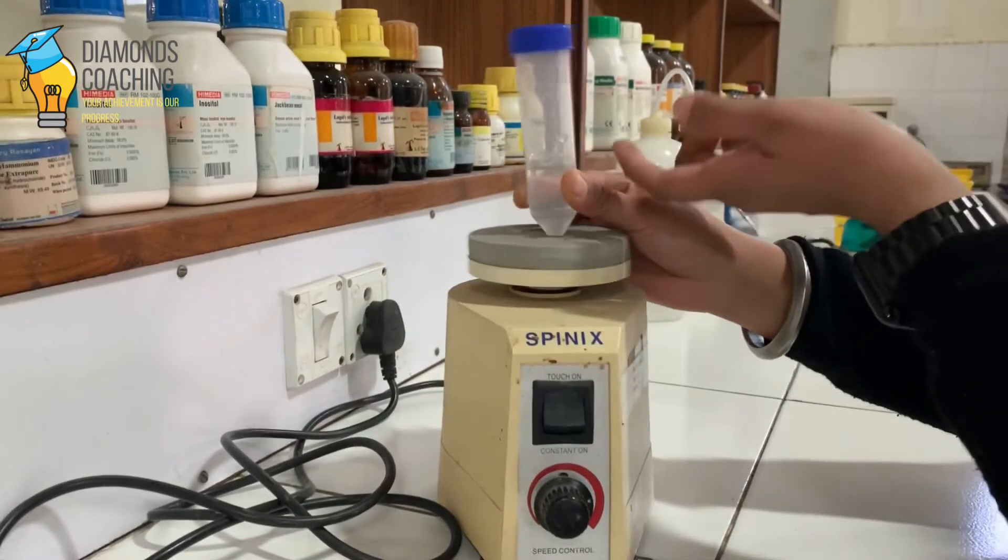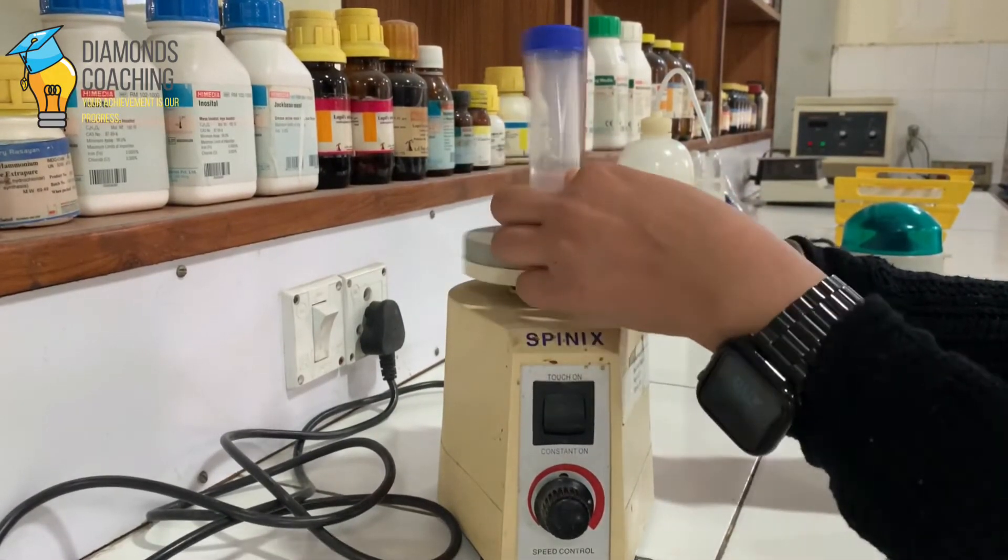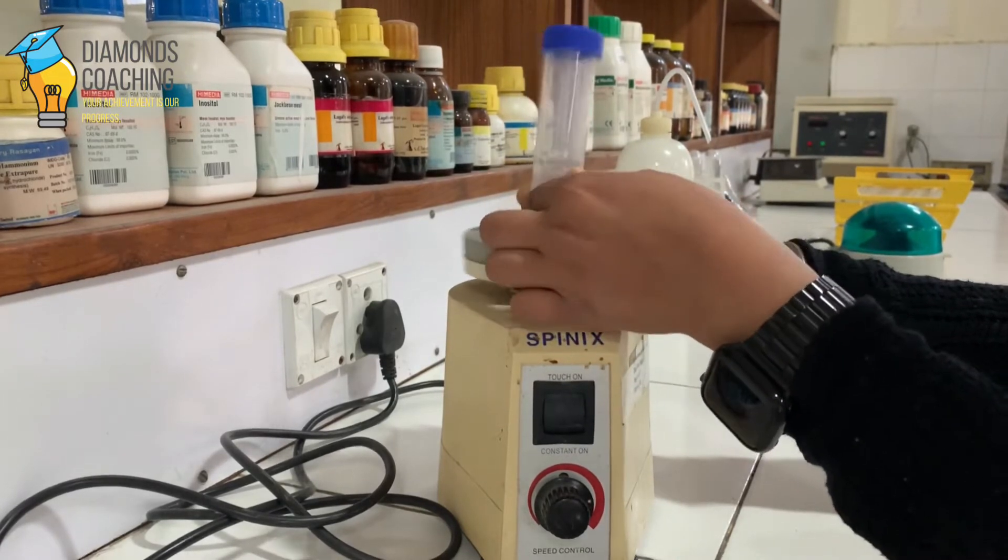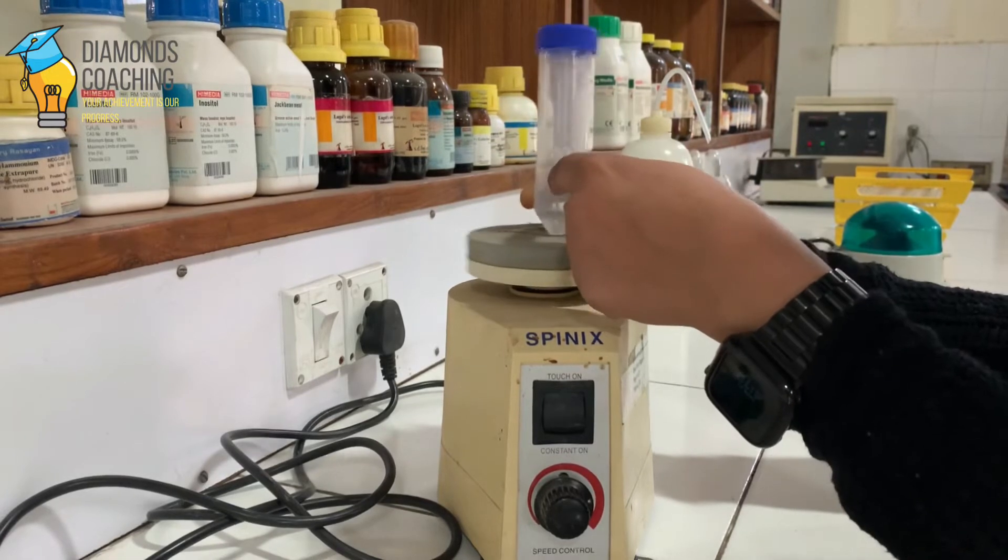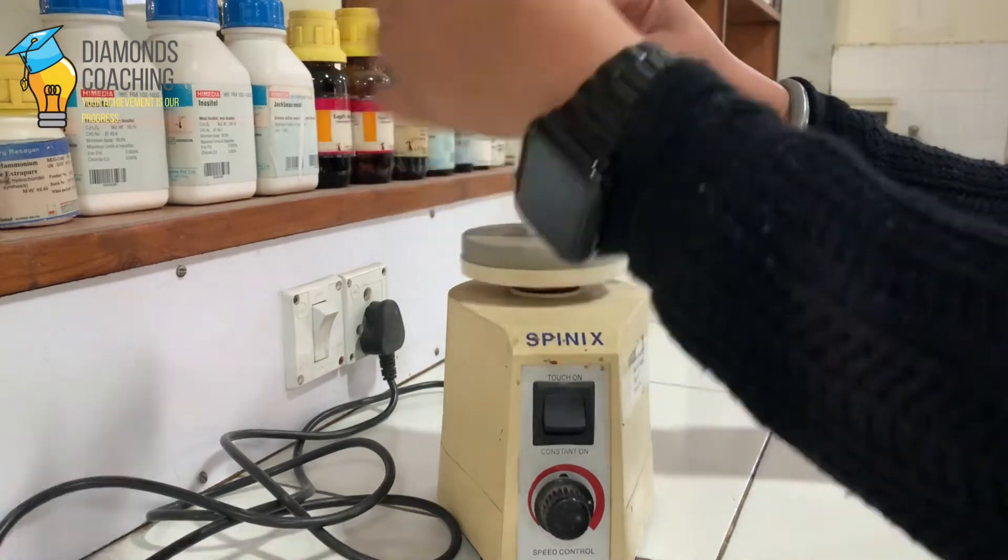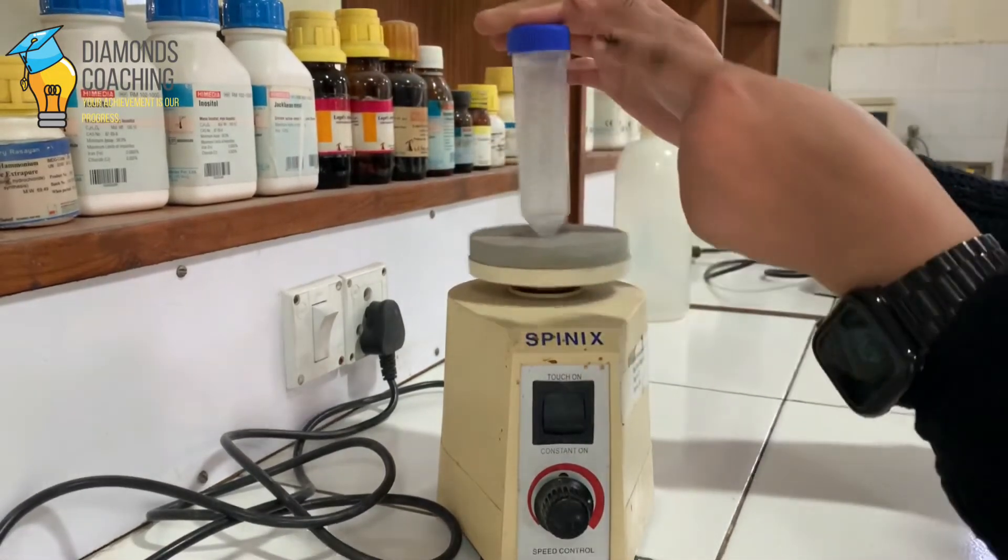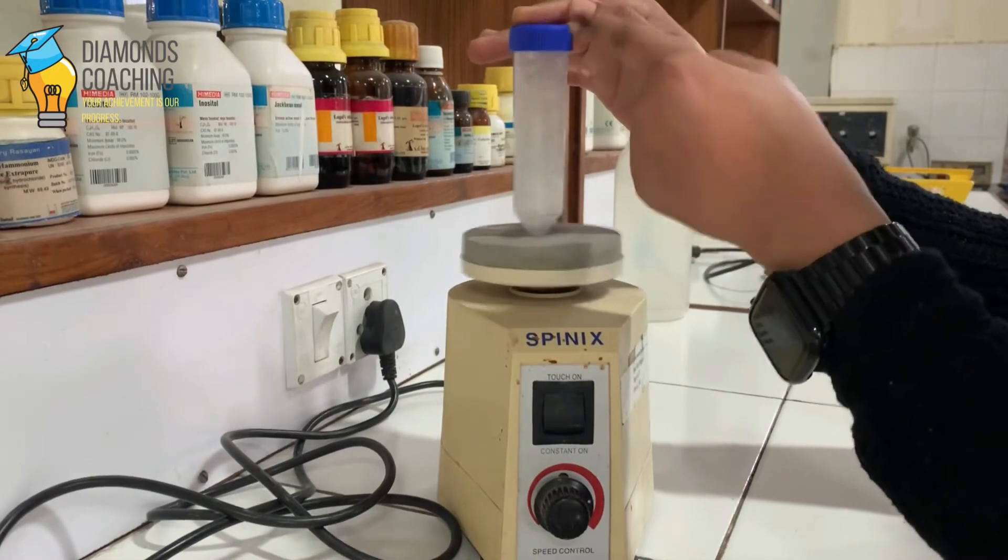So that if we want to mix the pellet from the lower side, then you should hold this vial from the lower side. And if you want to mix all the contents, then you should hold it from the cap or the upper side.